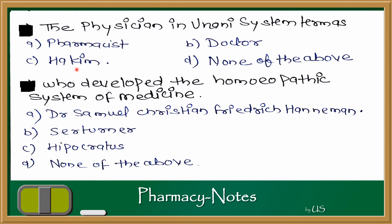Next question: who developed the homeopathic system of medicine? The options are Sertürner, Hippocrates, none of the above, and Dr. Samuel Christian Friedrich Hahnemann. The answer is Dr. Samuel Christian Friedrich Hahnemann, who developed the homeopathic system of medicine.